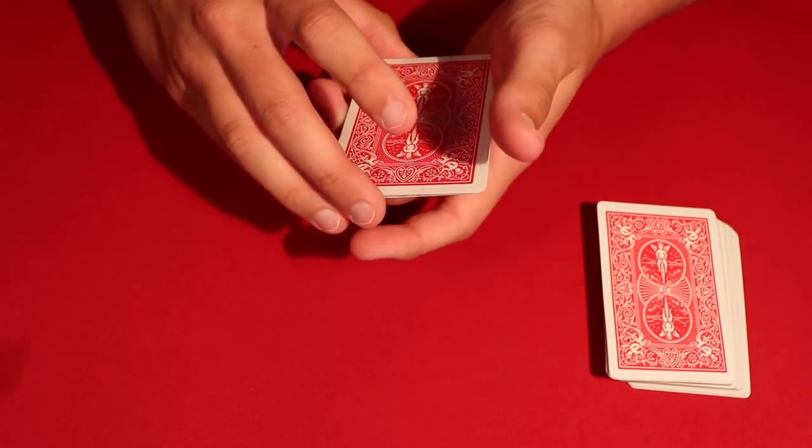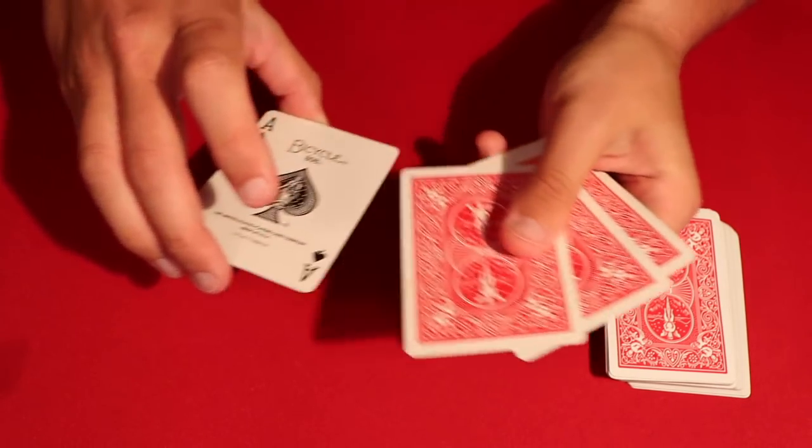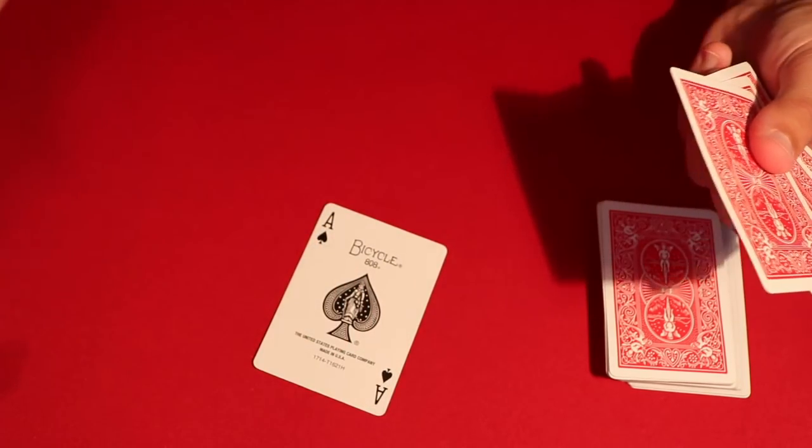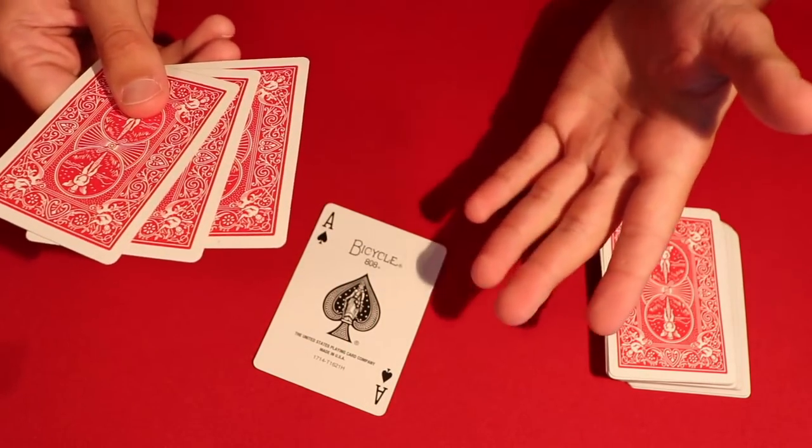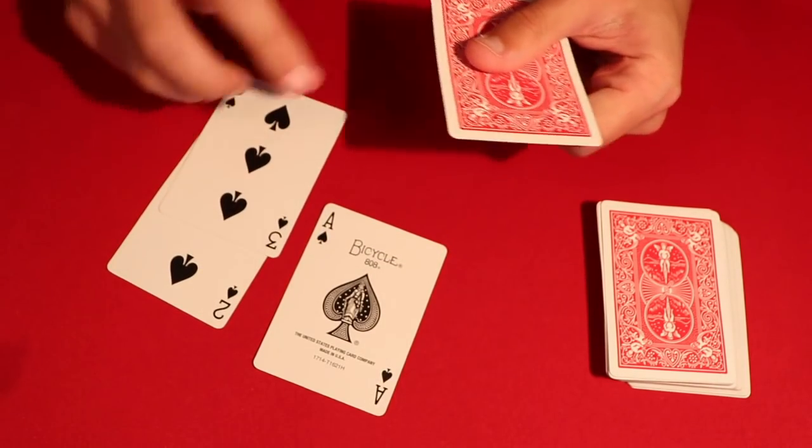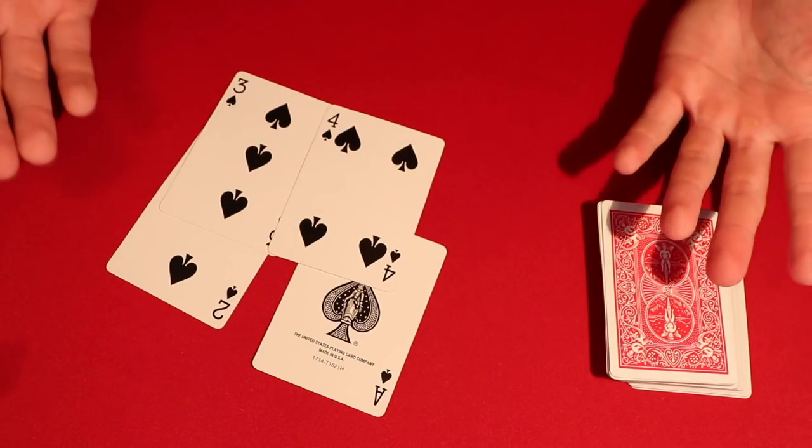So obviously now all the four aces are flipped over, but if I wanted to, I could snap my fingers and pull back that Ace of Spades. Now at this point, you're probably wondering how I'm using, or you're probably thinking I'm using more than four cards. But in reality, I'm only using one, two, three, four cards. And that is the trick. And if you guys want to learn how to do it, do not forget to check out for the tutorial.